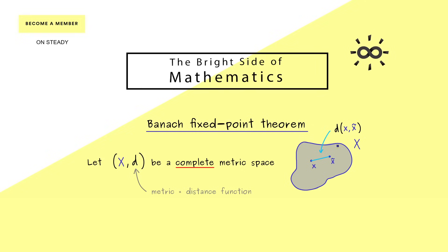For all other cases, the distance is a positive real number. Moreover, we also have two additional natural properties for this distance function. On the one hand we have symmetry, so it does not matter if we measure from x to x̃ or from x̃ to x. And on the other hand we have the famous triangle inequality, which means when we go a detour the distance will not get smaller.